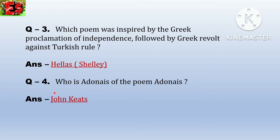Question number 4. Who is Adonais in the poem Adonais? P.B. Shelley's poem is Adonais, and Adonais in it is John Keats. Shelley wrote the Adonais poem on the death of John Keats. It is a kind of elegy, and in it he said that it was the brutal reviewers who were responsible for John Keats's death. So Adonais in the poem Adonais is John Keats.